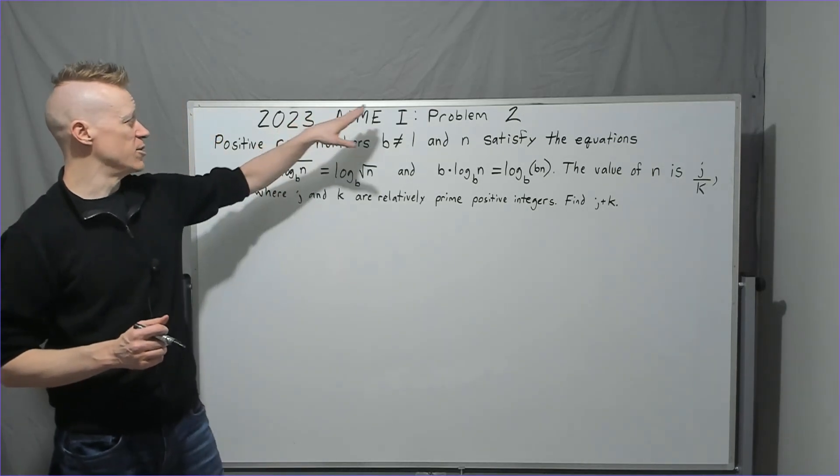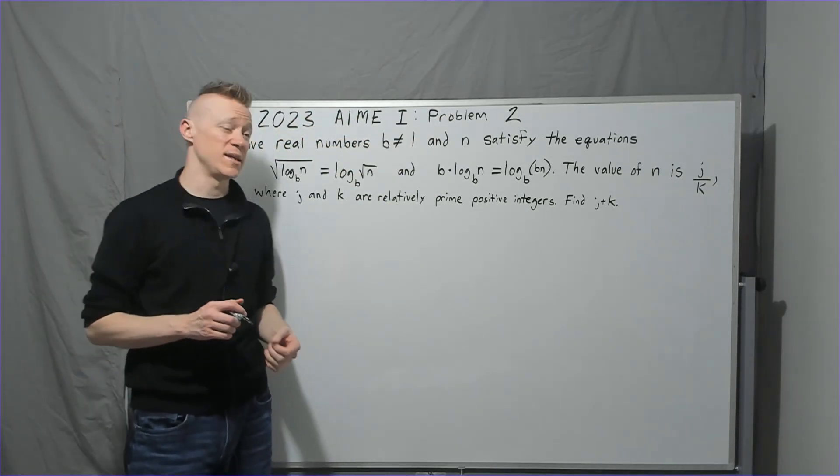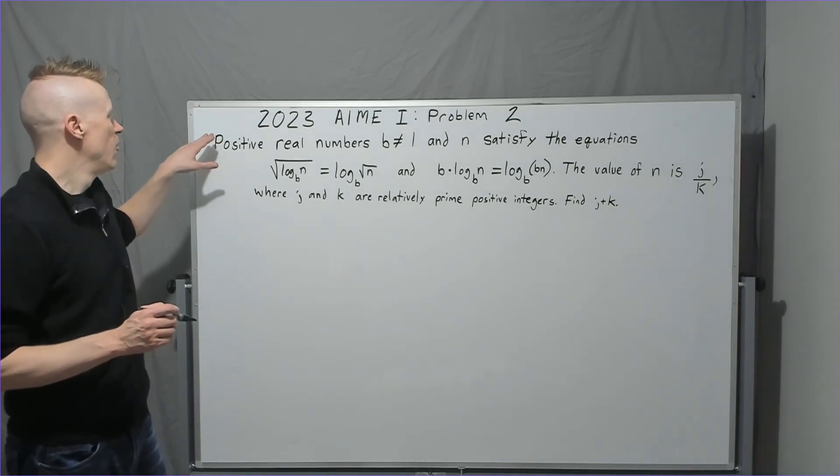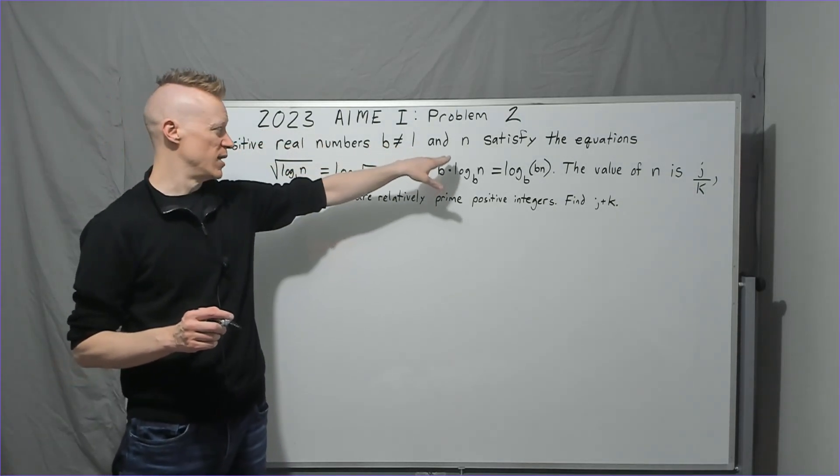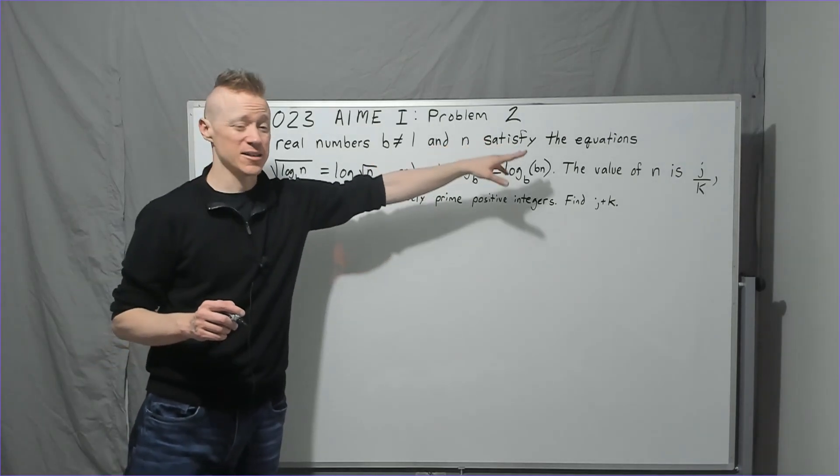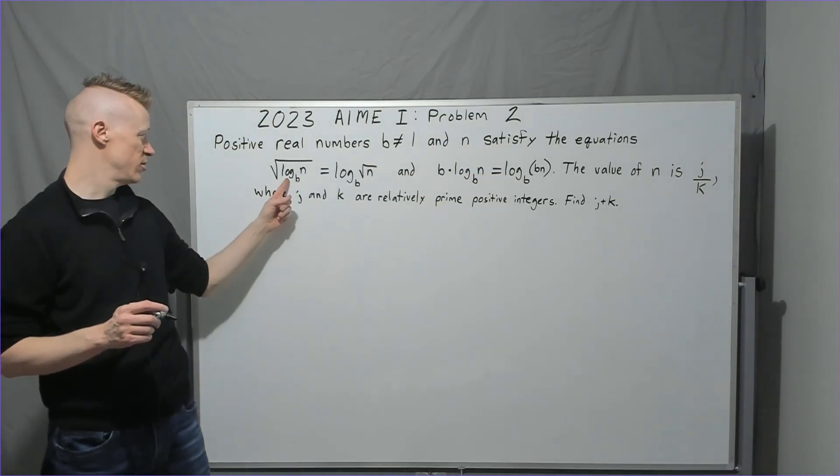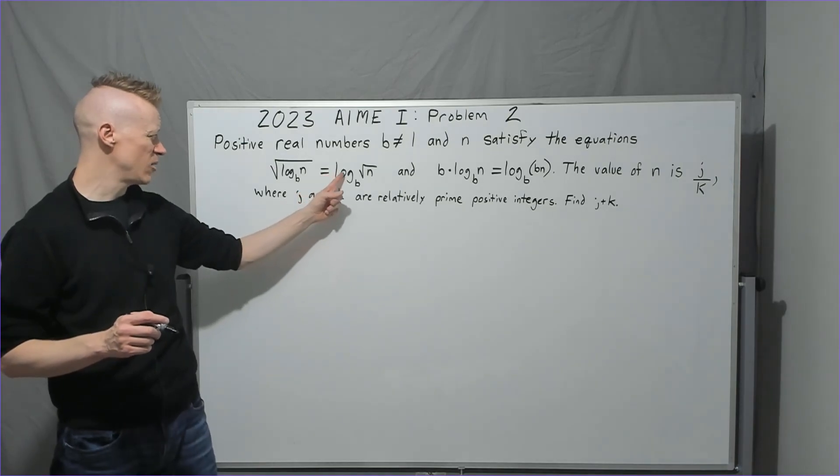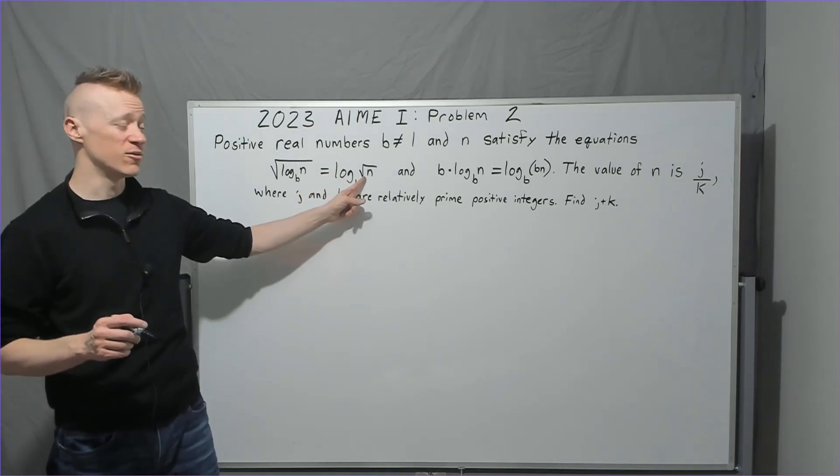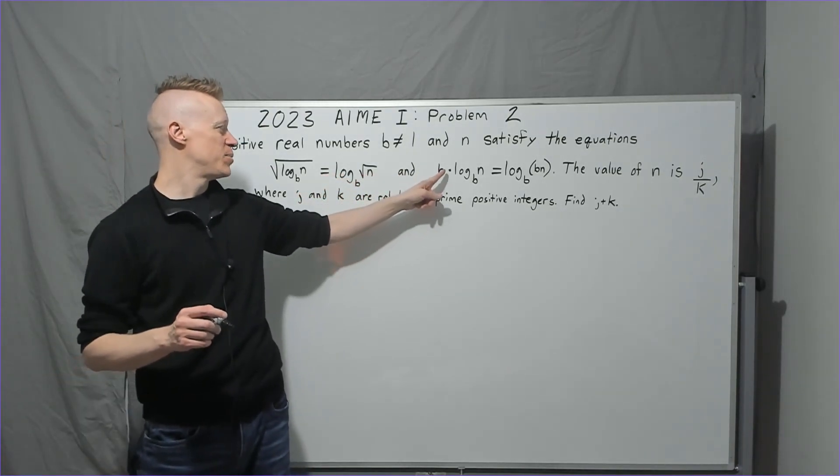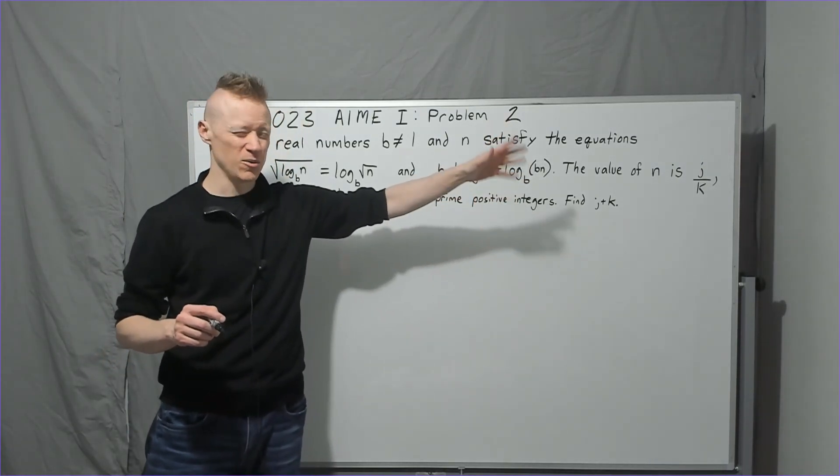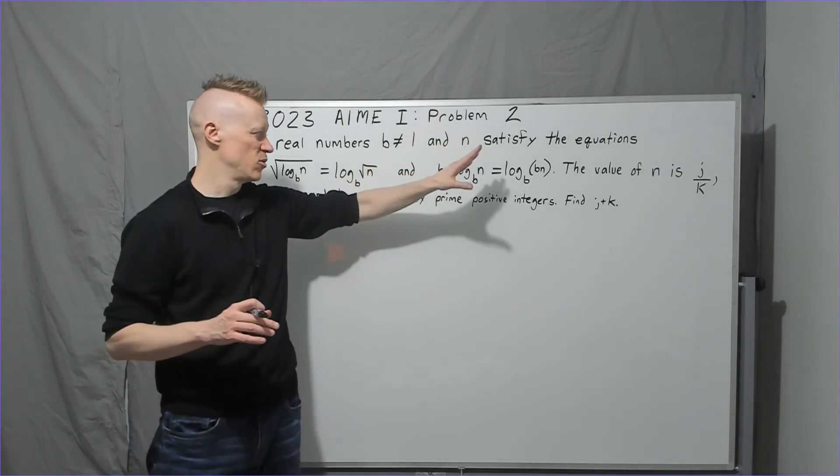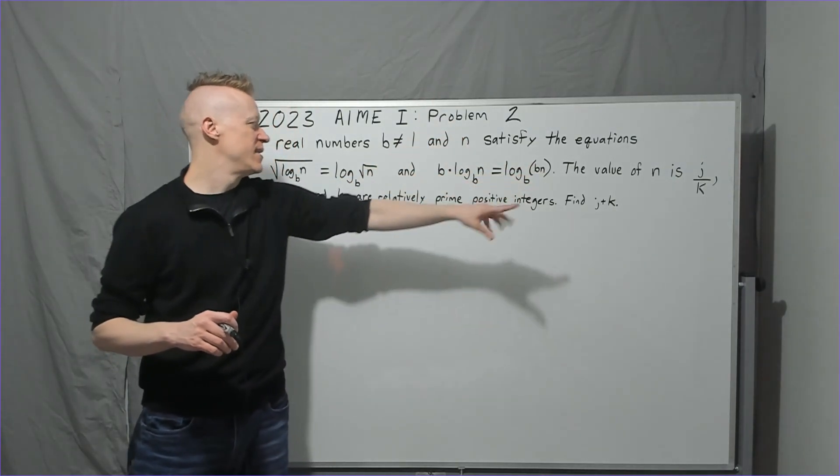All right, so on to problem number two from this year's 2023 AIME I, Problem 2. Positive real numbers b not equal to one and n satisfy the equations: square root of log base b of n equals log base b of radical n, and b times log base b of n equals [something]. The value of n is j over k, where j and k are relatively prime integers. Find j plus k.